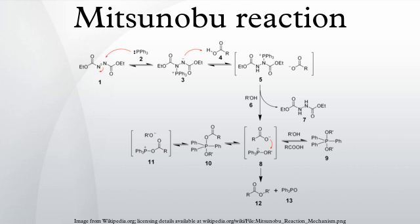The order of addition of the reagents in the Mitsunabu reaction can be important. Typically, one dissolves the alcohol, the carboxylic acid, and triphenylphosphine in tetrahydrofuran or other suitable solvent, cools to 0°C using an ice bath, slowly adds DEAD dissolved in THF, then stirs at room temperature for several hours.